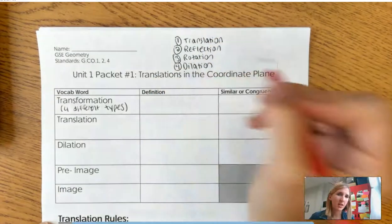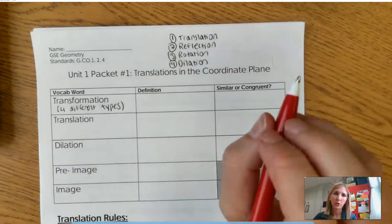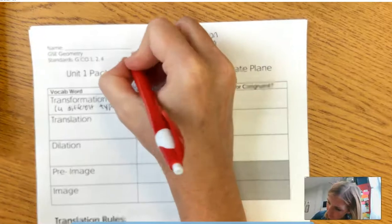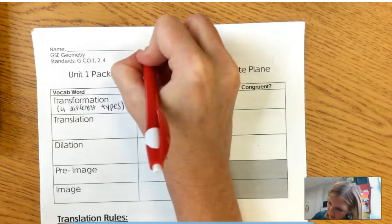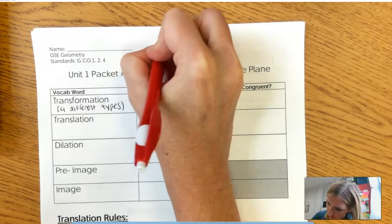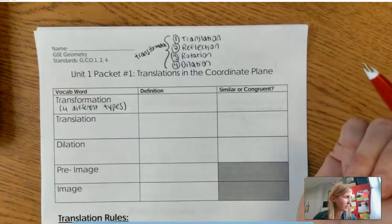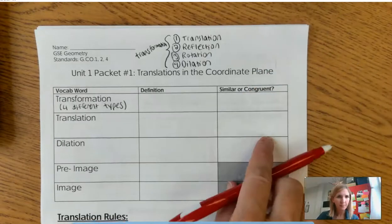We're going to briefly talk about dilation today, but we're going to focus on translations. So overall, every single one of these is a type of transformation. Translation is a transformation, so is reflection, so is rotation.